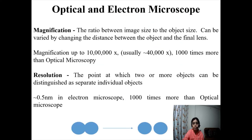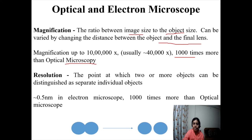What is the difference between magnification and resolution? Magnification is defined as the ratio between the image size and the object size, and it can be changed by varying the distance between the object and the final lens. Magnification with the electron microscope is usually a thousand times better than with the optical microscope. Resolution is defined as the point at which two or more objects can be distinguished as separate objects. For the transmission electron microscope, the resolution limit is 0.5 nanometers, which is a thousand times better than the optical microscope.